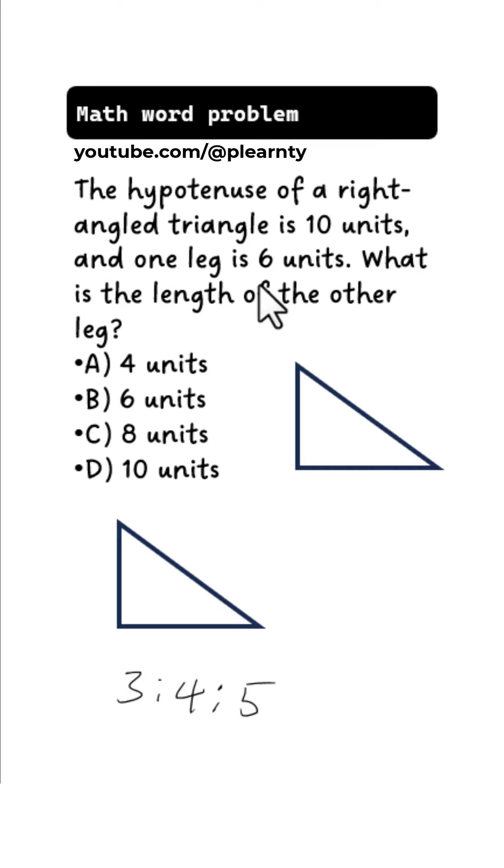The hypotenuse of a right-angled triangle is 10 units, and one leg is 6 units. What is the length of the other leg? I'll teach you a very simple trick to solve this kind of problem.